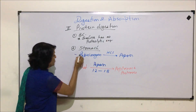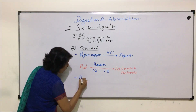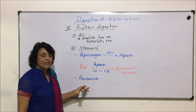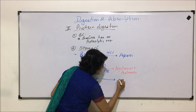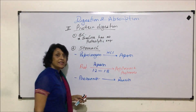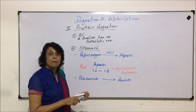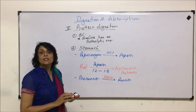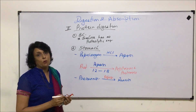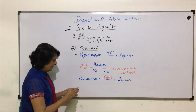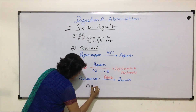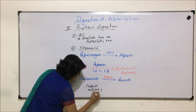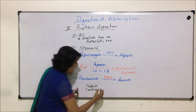The second enzyme in the stomach is also present in inactive form — it is pro-renin. Pro-renin is first activated into the active enzyme renin, and this activation is done by pepsin. Renin acts only on milk protein, that is casein.